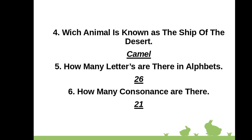Question 4: Which animal is known as the ship of the desert? Answer: Camel. Question 5: How many letters are there in the alphabet? Answer: 26.